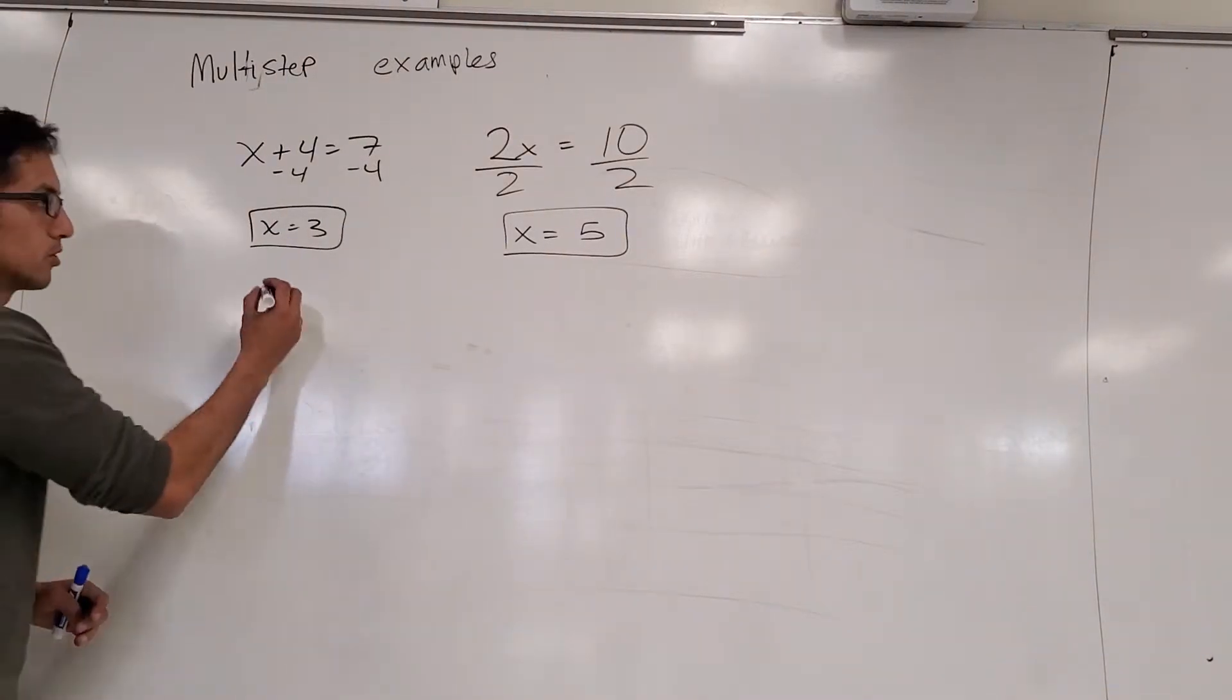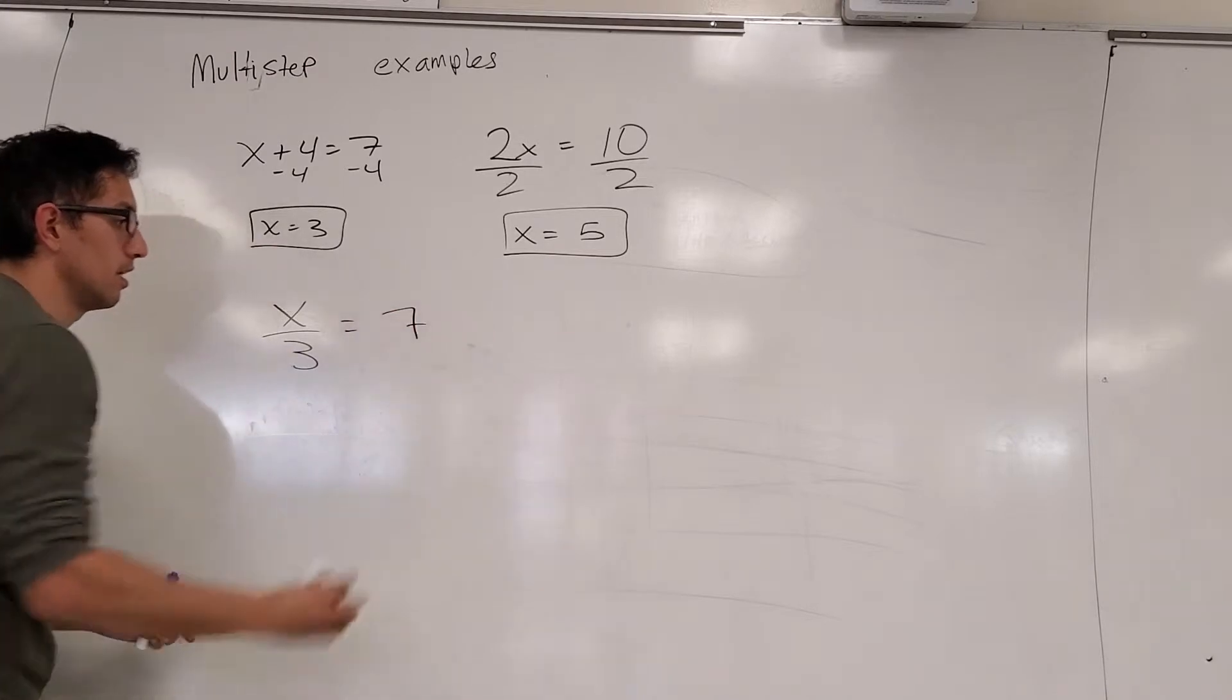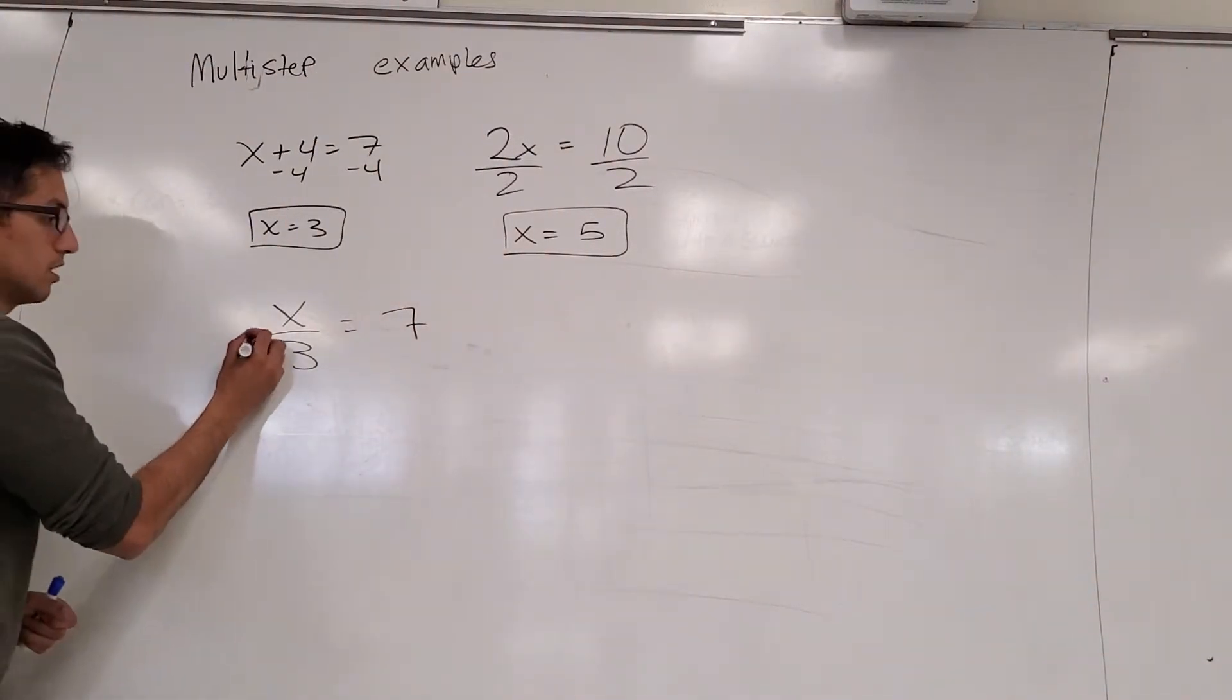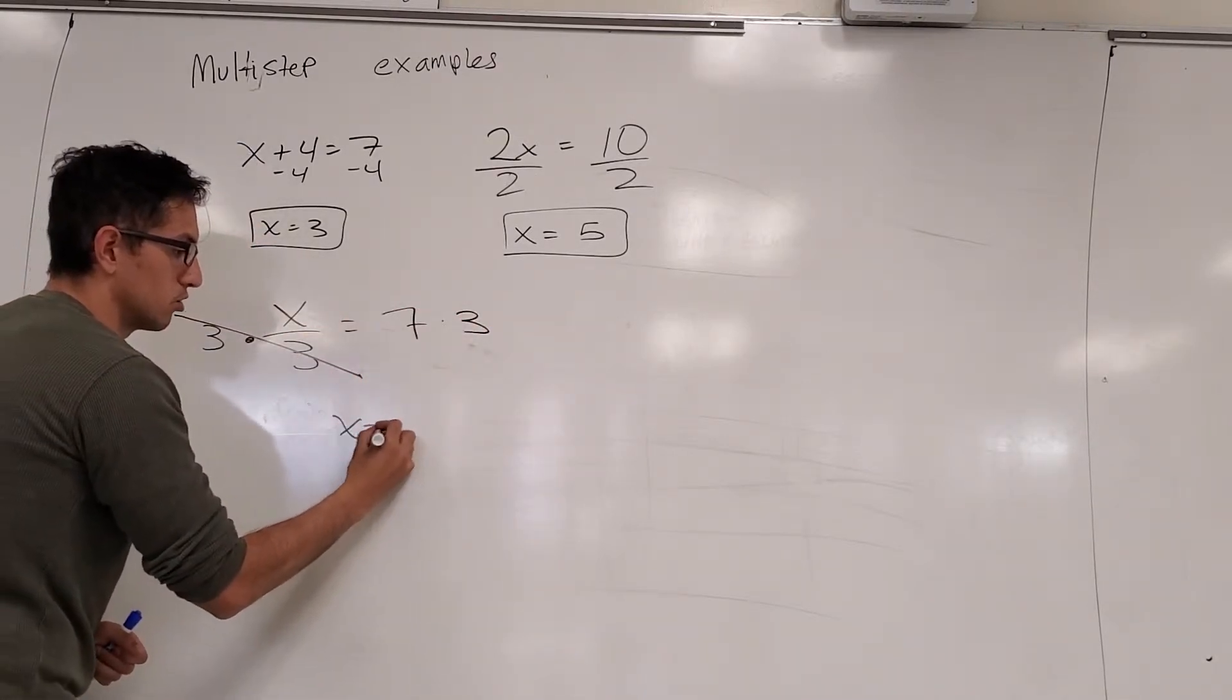Then one more single step before going into the multi, x divided by 3 equals 7. In this case, the x is getting divided by 3. Opposite of divide is multiply. So multiply both sides by 3. These cancel out, and you get that x is 21.